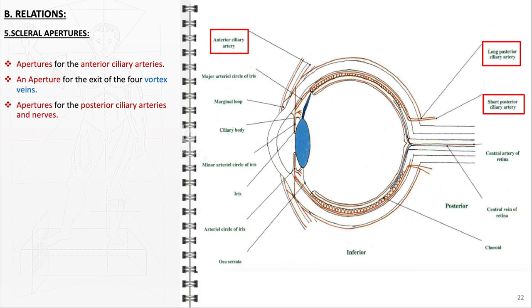The sclera features several apertures that are strategically placed to facilitate the passage of various structures. The apertures for the anterior ciliary arteries are essential for delivering blood to the anterior segment of the eye, ensuring the nourishment and health of structures like the cornea and iris. There is also an aperture for the exit of the four vortex veins. These veins play a significant role in the venous drainage of the eye.